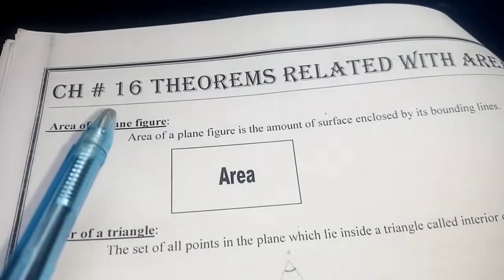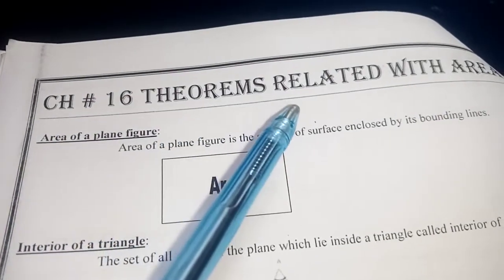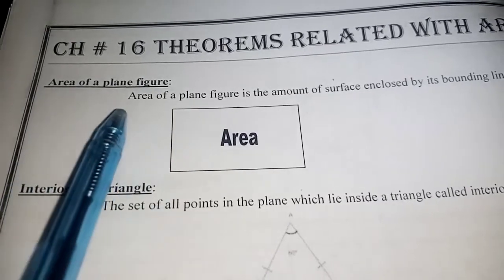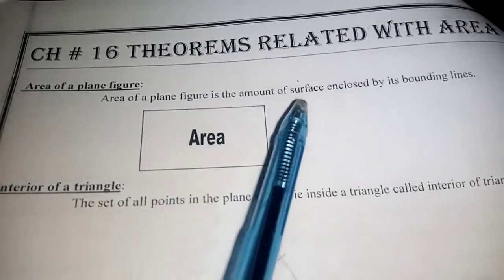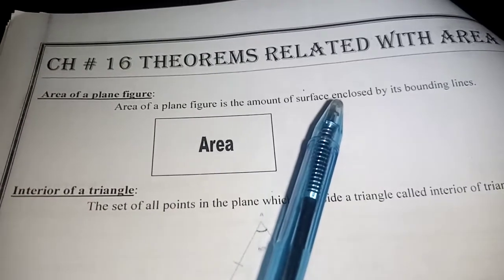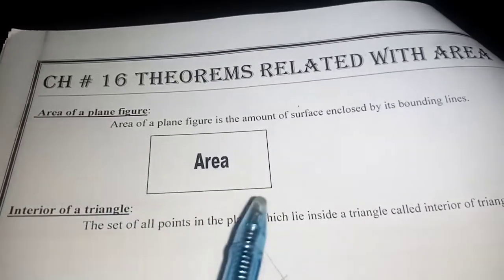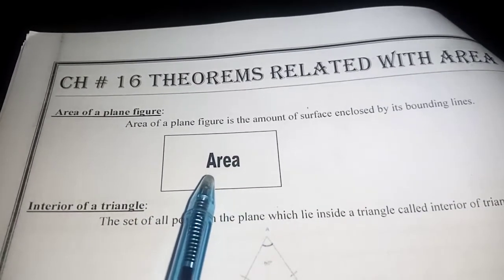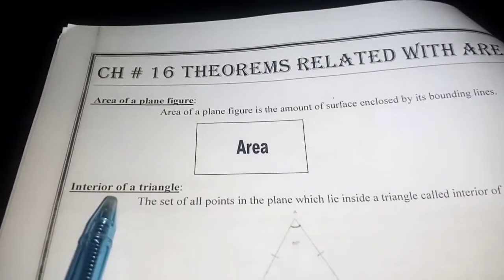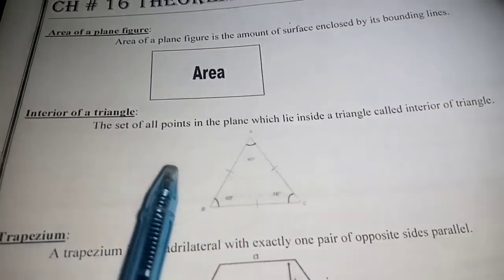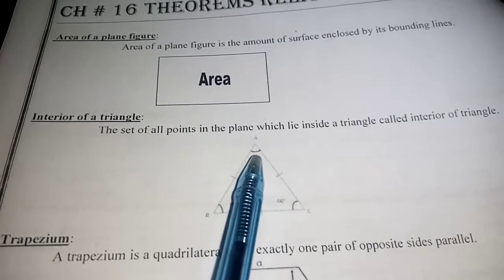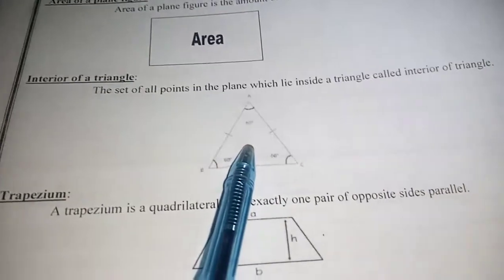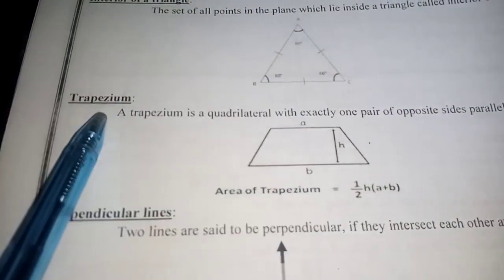Now we move to unit number 16, theorems related with areas. What is the area of a plane figure? The area of a plane figure is the amount of surface enclosed by its bounding line — the region occupied by the bounding line is called the area of a plane figure. Next, the interior of a triangle: the set of all points in a plane which lie inside a triangle is called the interior of a triangle.